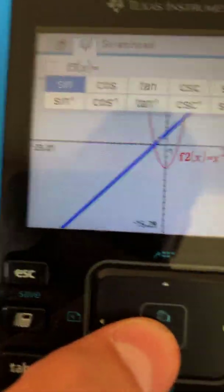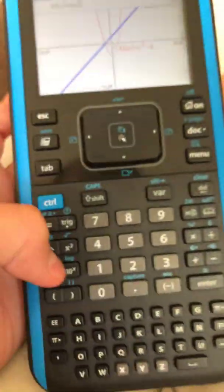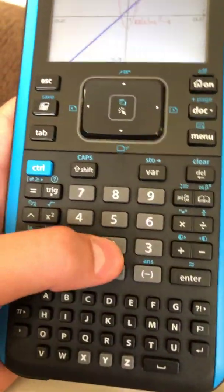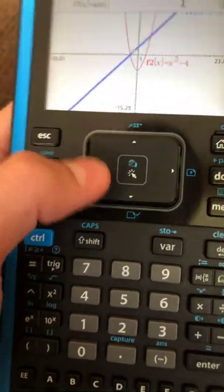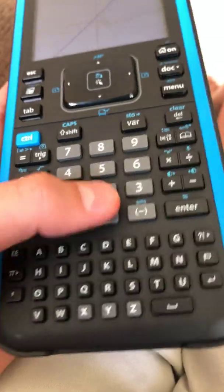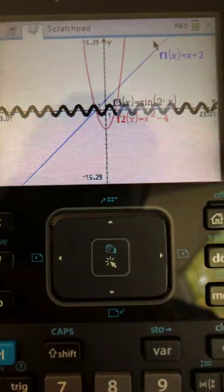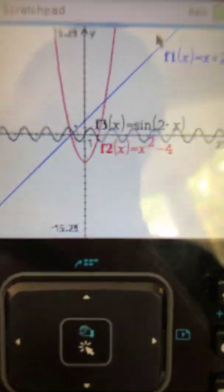Trig, just click trig, and then say sine of, just say sine of 2x maybe. And we see it graphs that very nicely.